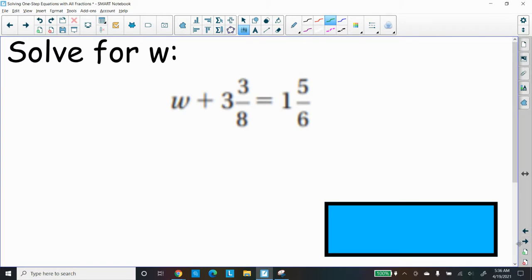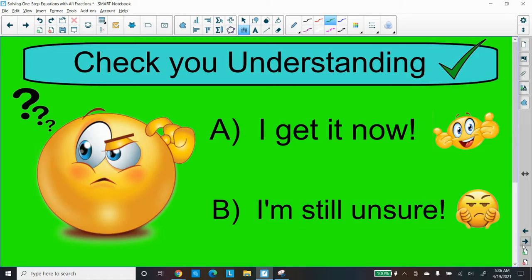Here's a question for you to solve. Solve for W. Remember, use your calculator. W plus 3 and 3 eighths equals 1 and 5 sixths. That's for you. Hopefully, you will understand what's going on. If you're not sure, re-watch the video and use that tip. That's a good way to deal with this question.